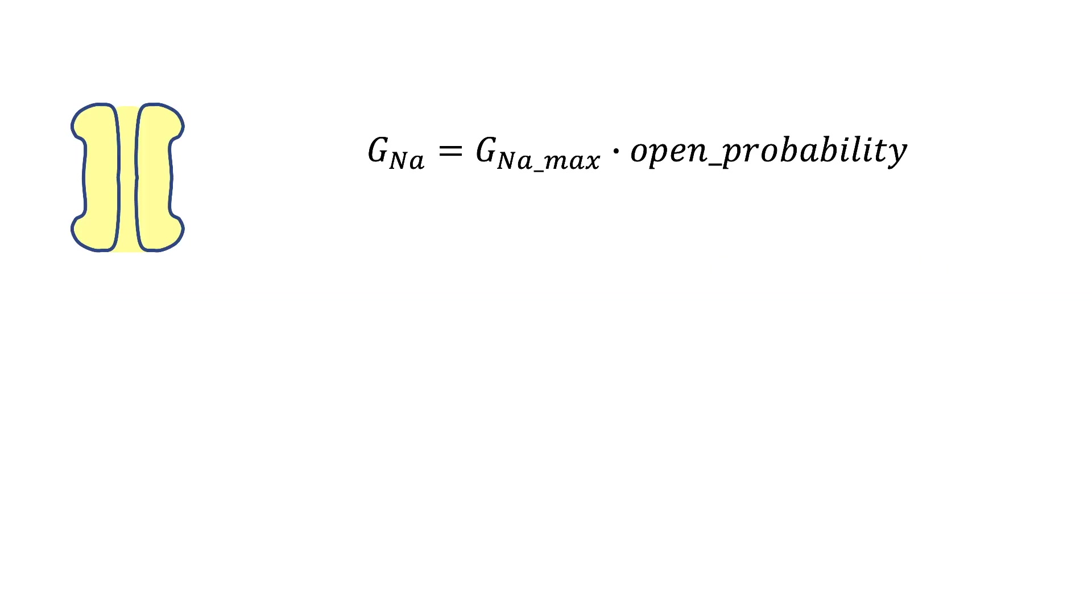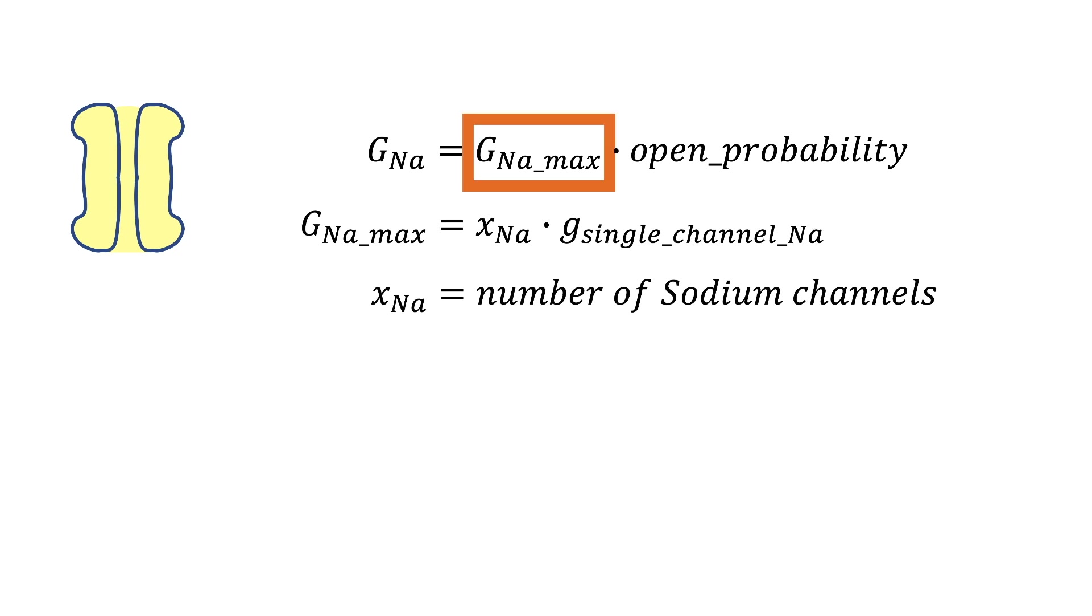Taking a look at our sodium channel again, the formulation for this is chosen so that we have a maximum conductance GNA max, which is the conductance when all channels are open, and we multiply that by a probability that the channel is open.